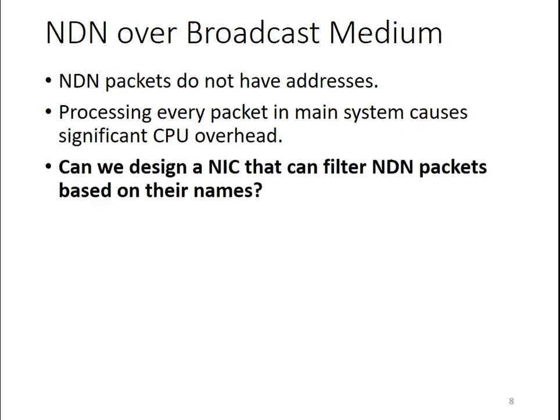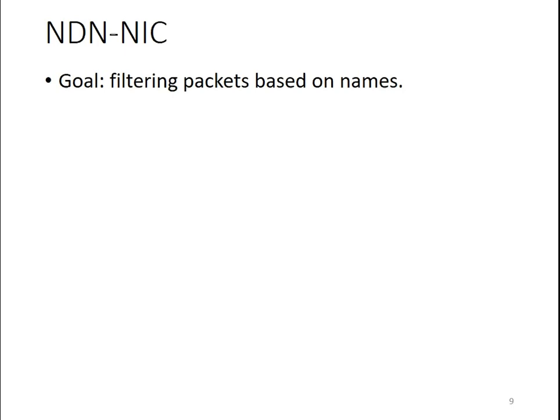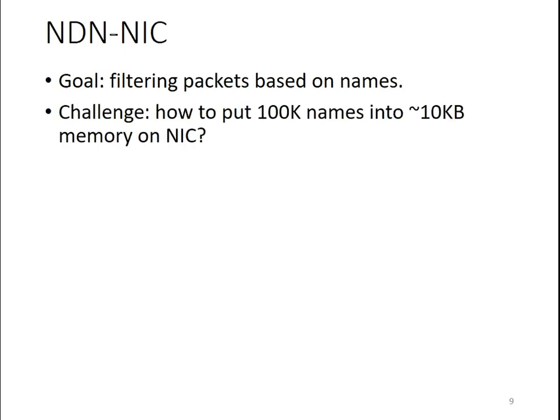So our question is: can we design a network interface card that can filter NDN packets based on their names? We designed NDN Unique. The goal is to do packet filtering based on names. But one problem is there are hundreds of thousands of names in a typical NDN node, while a network interface card only has tens of kilobytes of memory. How do we fit so many names into this small amount of memory? This is the major challenge in NDN Unique design.